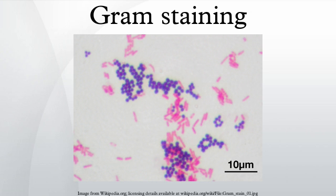Medical Gram stains are performed on body fluid or biopsy when infection is suspected. Gram stains yield results much more quickly than culturing, and are especially important when infection would make an important difference in the patient's treatment and prognosis. Examples are cerebrospinal fluid for meningitis and synovial fluid for septic arthritis.